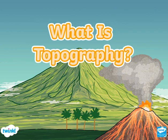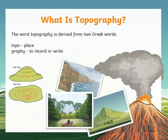We will start off by breaking down the word topography. Topo means place, and graphy means to record or write. As we all know, most of our English language is derived from Greek.